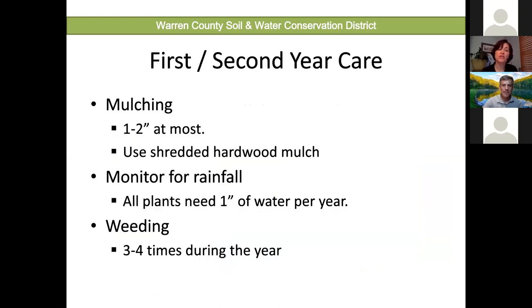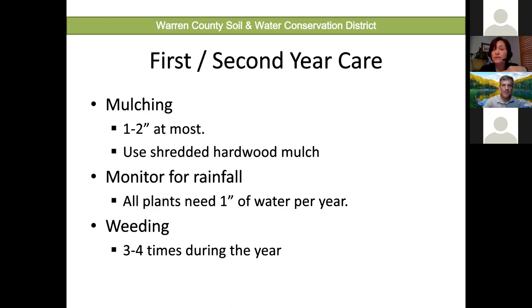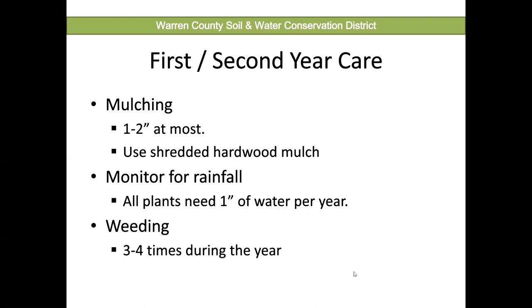For first and second year care: mulch one to two inches with shredded hardwood mulch—this is less likely to float than non-shredded mulch. Monitor for rainfall; all plants need about one inch of water per week, though newer plants may need a little more. Do a finger test—dig down to check soil moisture, since roots won't be very deep on new plants. Weeding is really important because your plants won't be large enough to shade out weeds yet. Expect to weed a minimum of three to four times a year, possibly more.